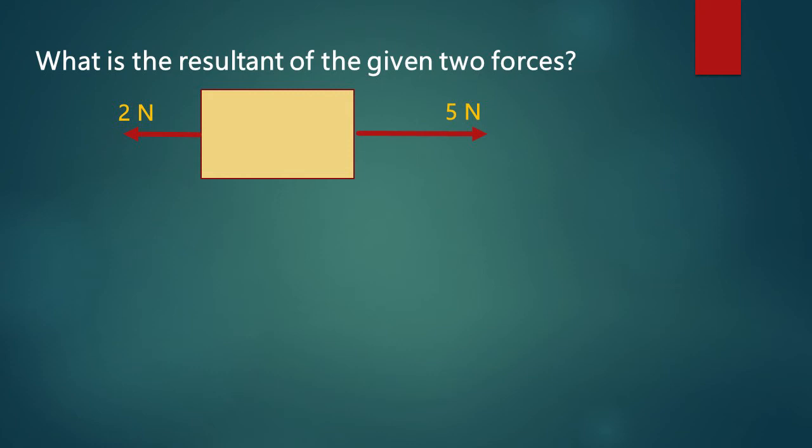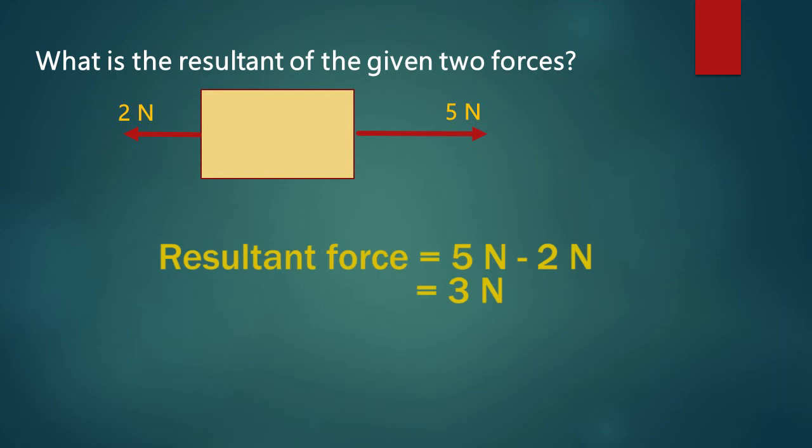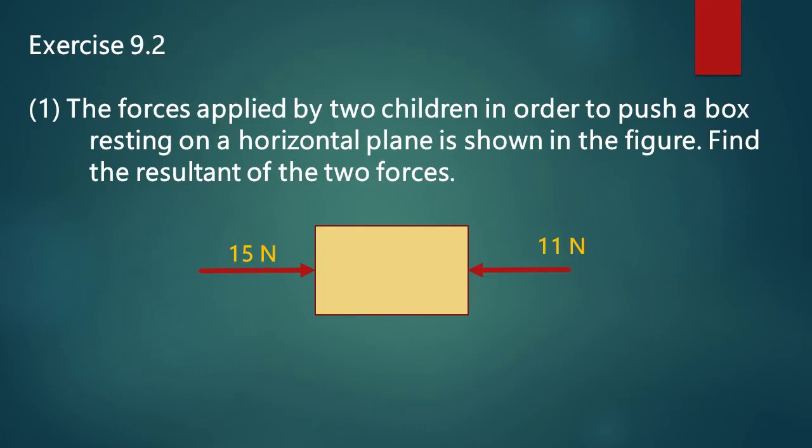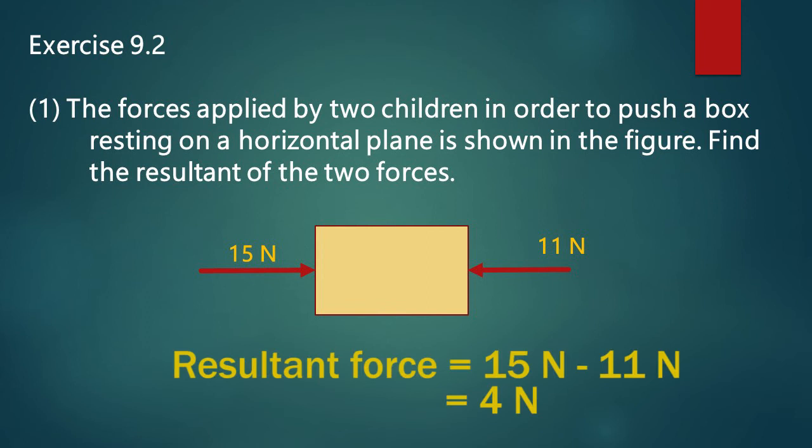Now you can pause the video and do this example. To get the resultant force, we subtract 2 from 5, which gives 3 Newton, and the direction of the resultant force is towards the 5 Newton force. In the next question, the resultant force is found by subtracting 11 Newton from 15 Newton, giving 4 Newton, and the direction of the resultant force is the same as the 15 Newton force.